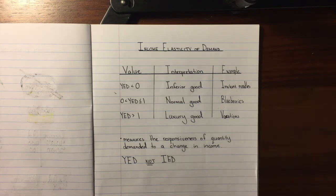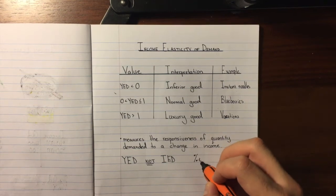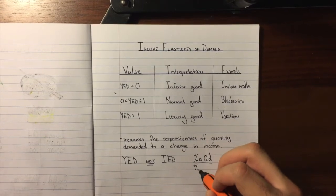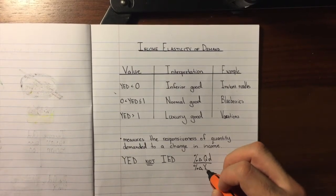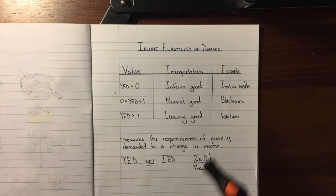In this video we're going to take a look at Income Elasticity of Demand, which measures the responsiveness of quantity demanded to a change in income. The formula we use is the percent change in quantity demanded divided by the percent change in income. We use Y for income, not I, because the letter I is used in a different topic in economics. Any time you see YED, that corresponds to Income Elasticity of Demand.